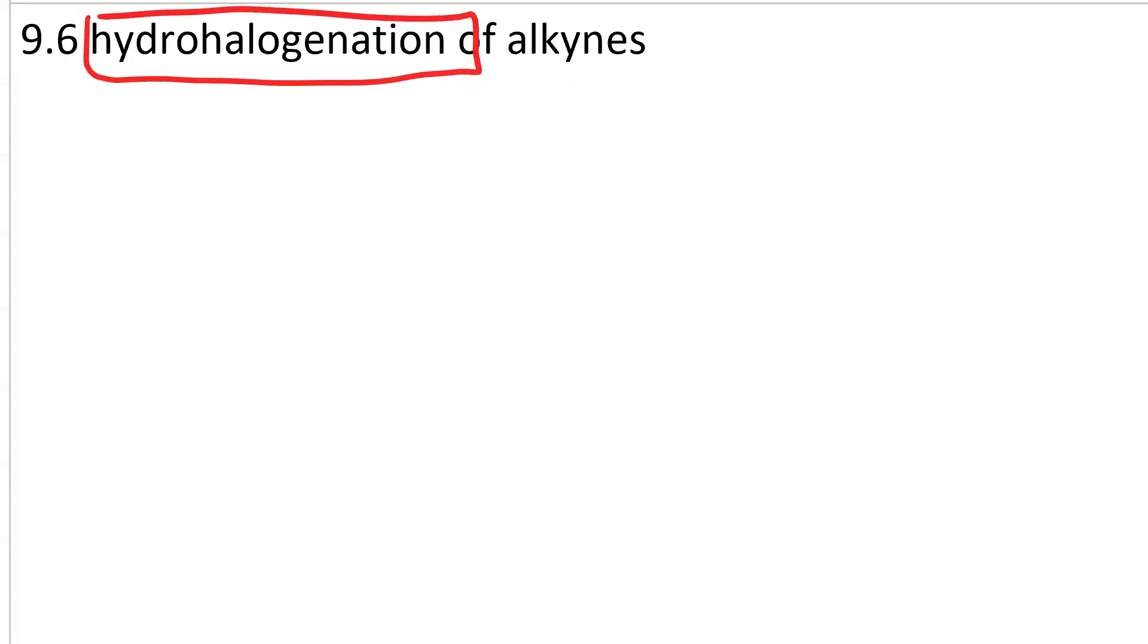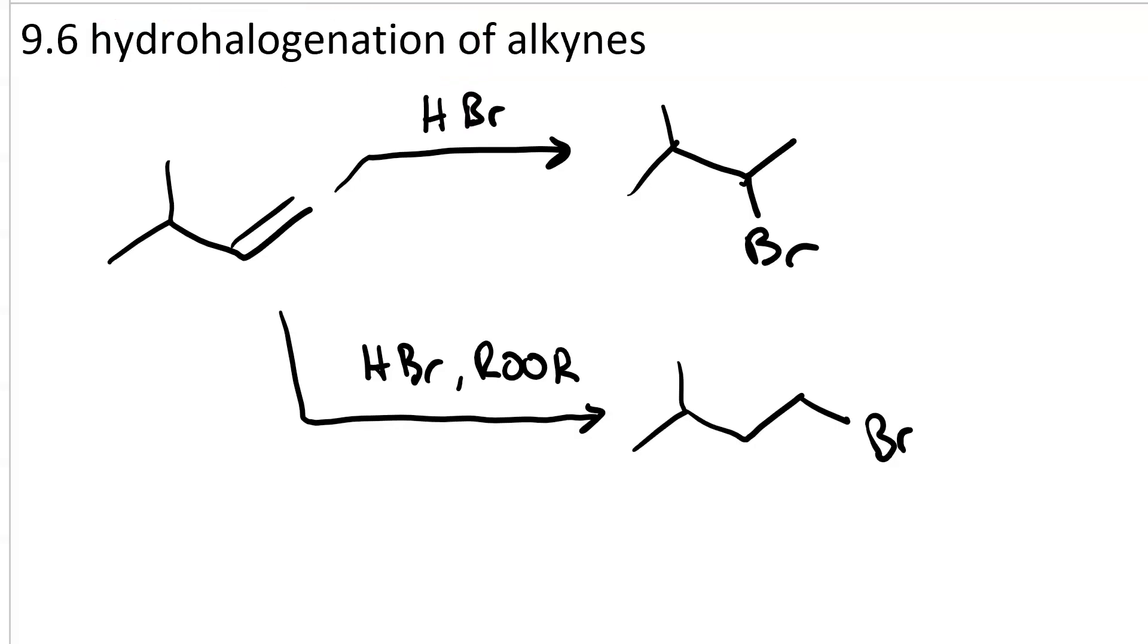Hydrohalogenation of alkenes. Recall that with alkenes when we treat with a halo acid like HBr, HCl, or HI, we get the Markovnikov product.